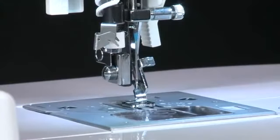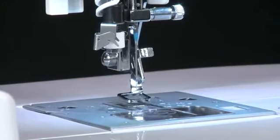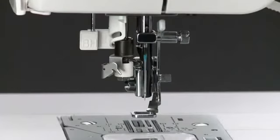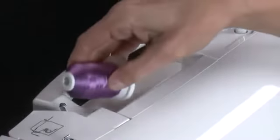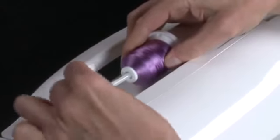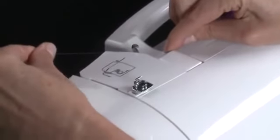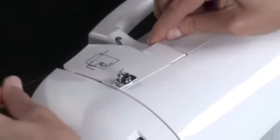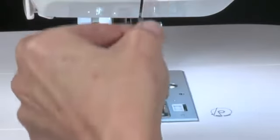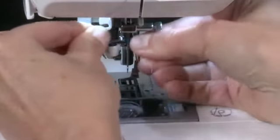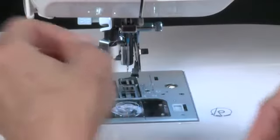To thread the upper part of the machine, raise the presser foot lifter. Turn the handwheel counter-clockwise until the needle is in its highest position. Place the thread spool onto the spool pin and secure it with the appropriately sized spool cap. Bring the thread in front of this guide. Pull it into the guide at the top of the machine. Continue bringing the thread straight down the groove at the front of the machine, and then into the guide located just above the needle.